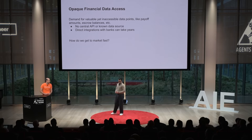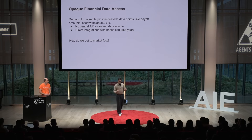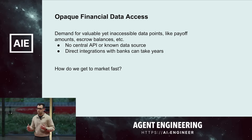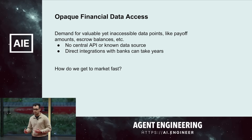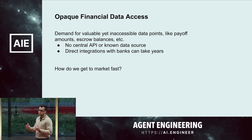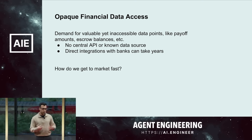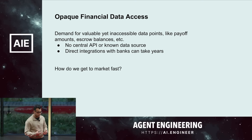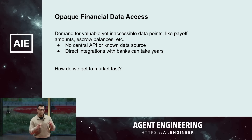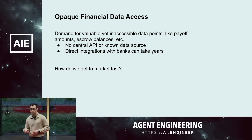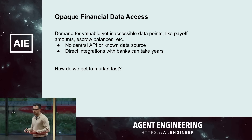One of the early challenges we faced with this aggregation pipeline was that customers came to us and said it would be really nice if you could give us liability-specific data points, like the payoff amount on an auto loan or the escrow balance for a mortgage.